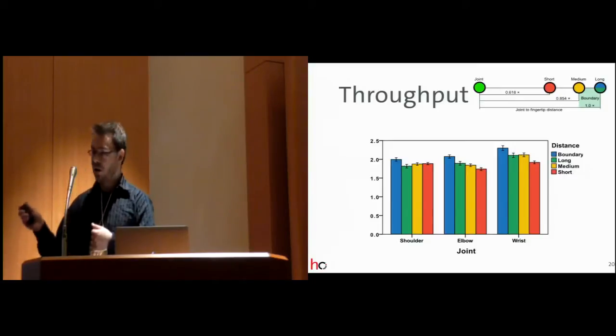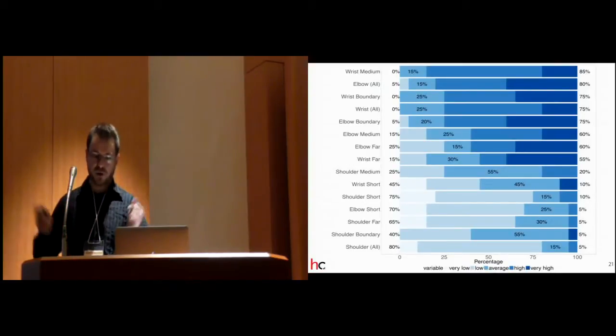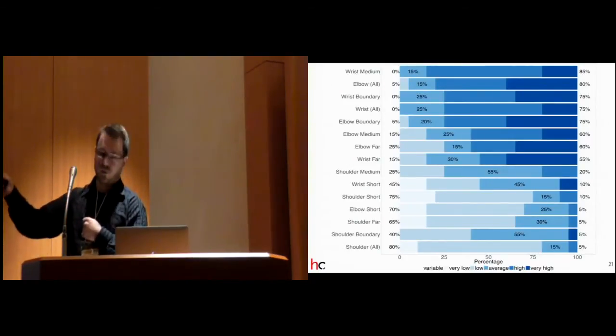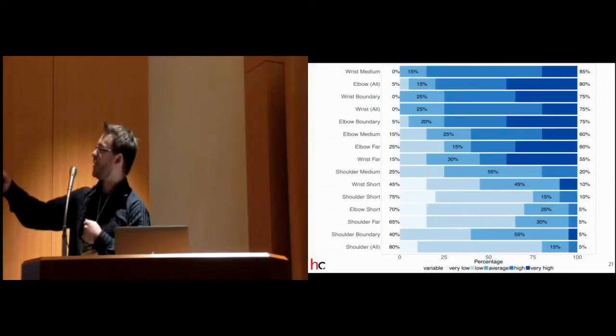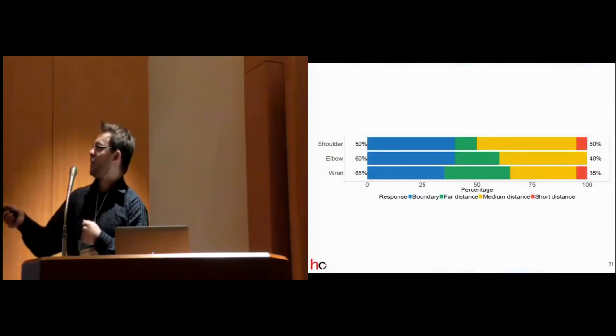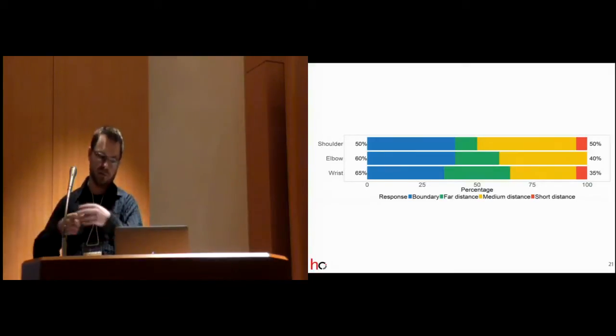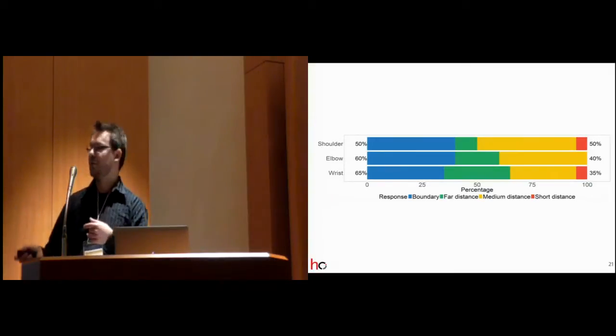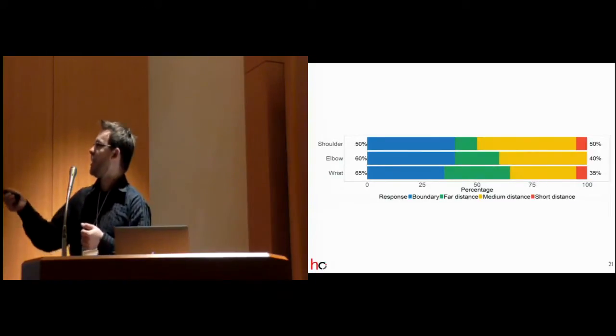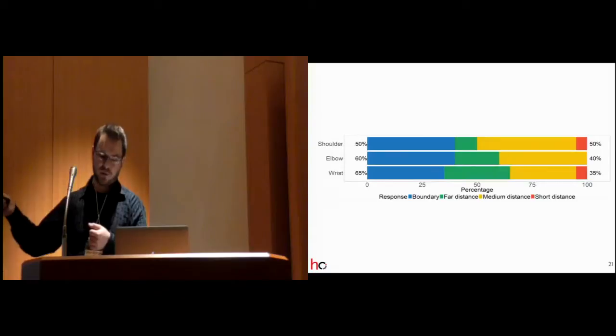So, again, we have the correlation. We also asked a bunch of subjective questions. So, we asked the users to really rate all the various conditions. You see wrist of medium distance was apparently the one that most people preferred. A little bit of a condensed version, you can see here. And, surprisingly, we found out the boundary condition was preferred. Obviously, they liked the snapping. It made the whole task easier. The long distance was not liked too much. And the medium distance was actually preferred.